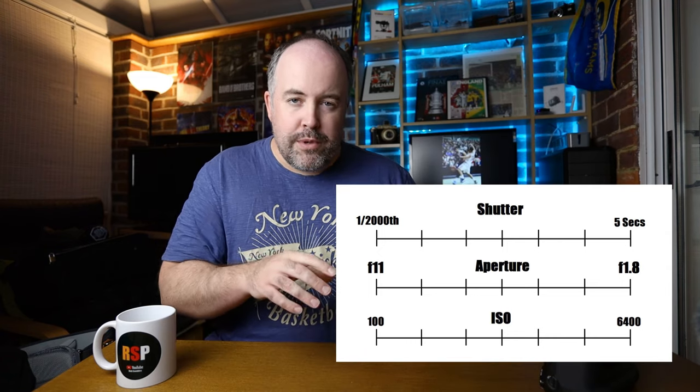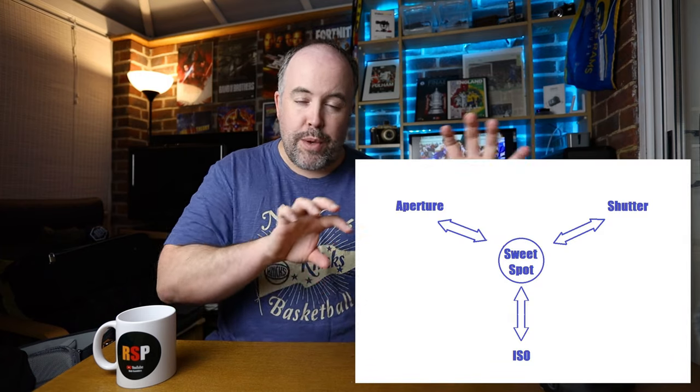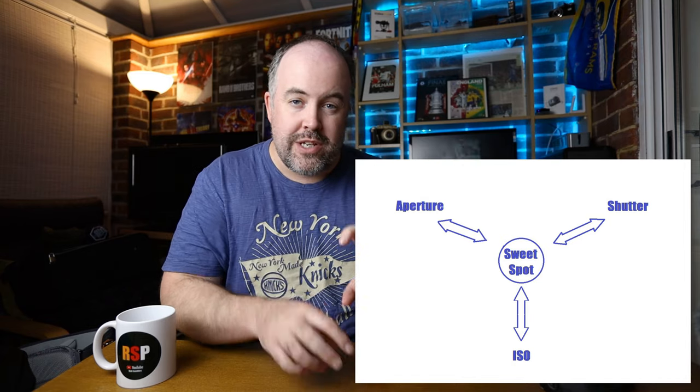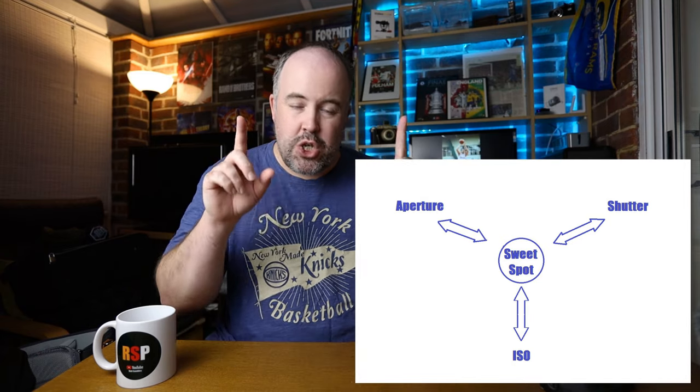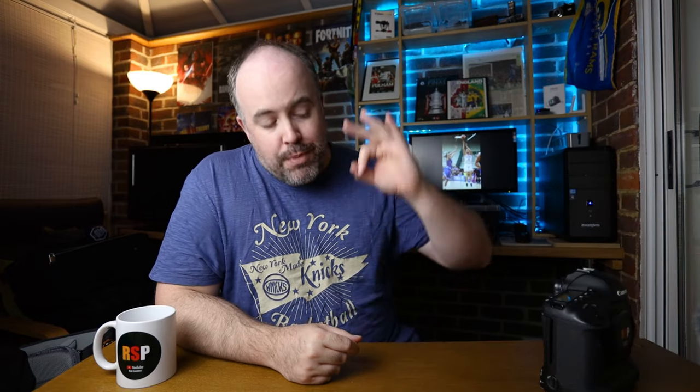There are three settings and all three work together. In very simple terms, if you imagine a sweet spot that is your ideal exposure — as you adjust your ISO, shutter speed, or aperture they will all pull in different directions and change that exposure. You need to get the perfect balance between the three to get your exposure just right and end up in that sweet spot. That's the foundation of manual photography.